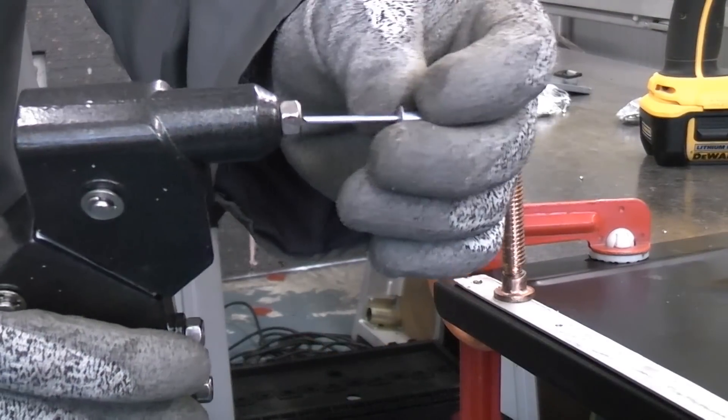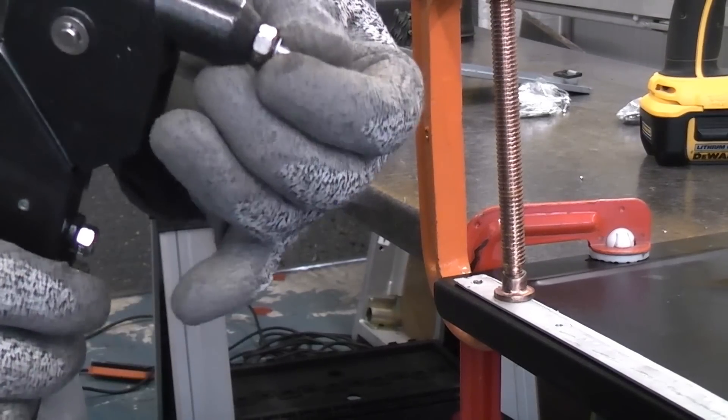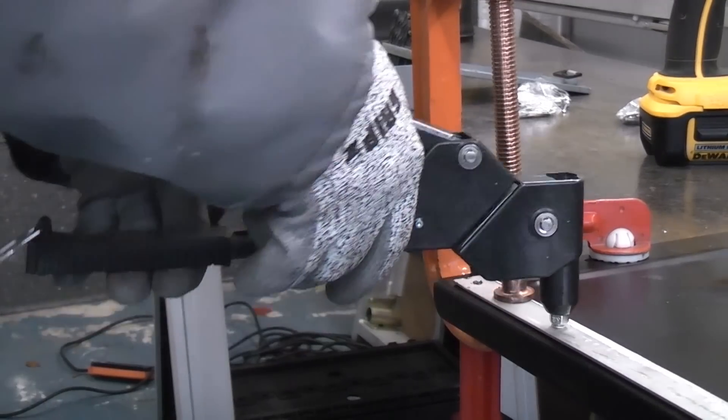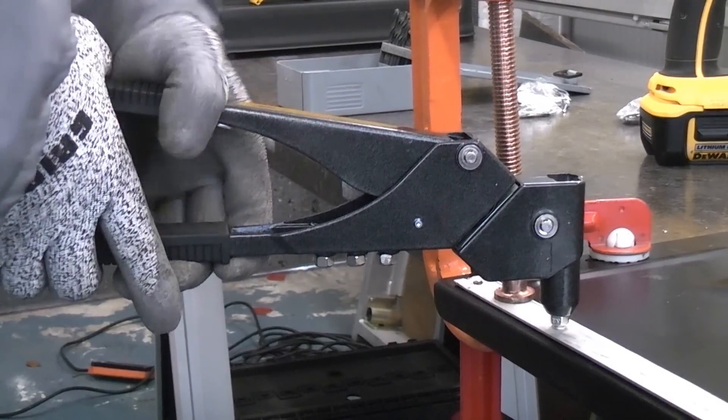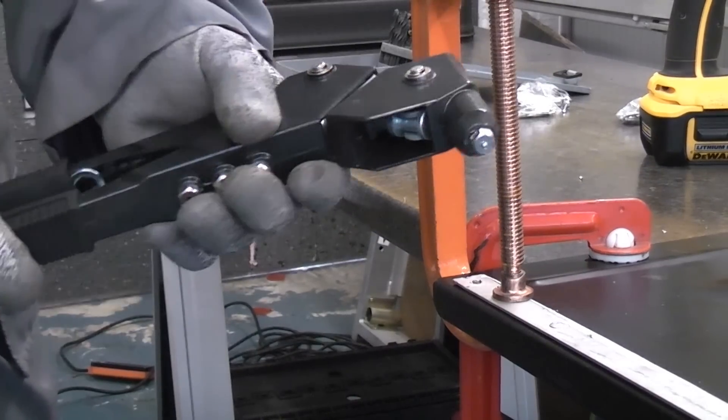So we can now push the rivet into the rivet gun. If you just squeeze the handles gently it will grip the rivet and stop it falling out. We can now push that through the hole and then squeeze the handles together until the rivet shears off.